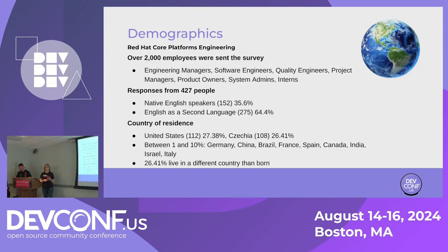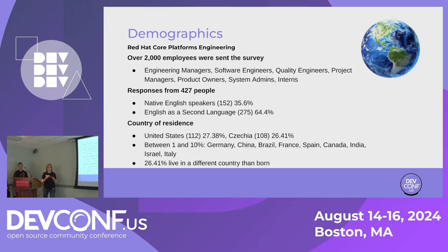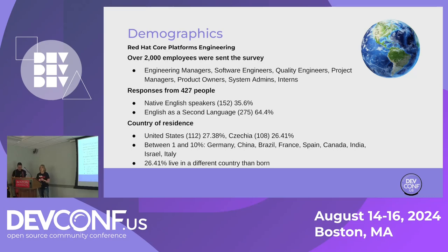We also asked what country people live in. Just about the same percentage of US and Czech respondents answered, together making up over half of responses, with many other countries between 1 and 10% and a long tail under 1%. We also asked what country people were born in to see how many don't live in their birth country — about 26% live in a different country than they were born in. This is just Core Platforms survey respondents, but it raises the question of whether this is common across open source.